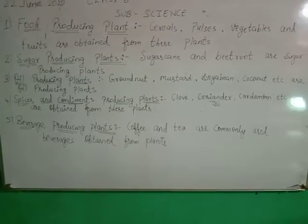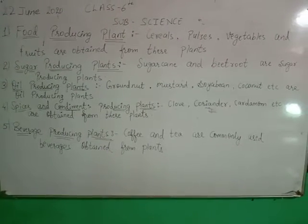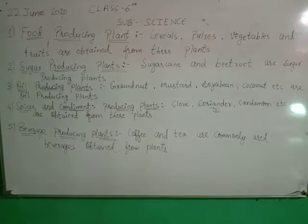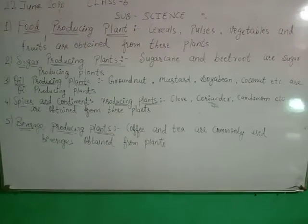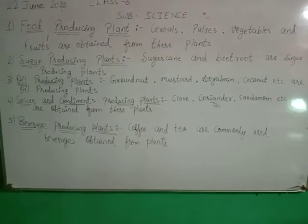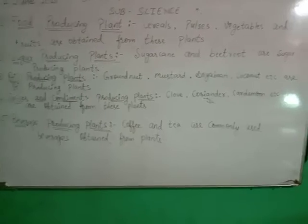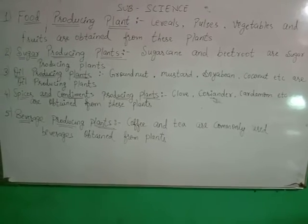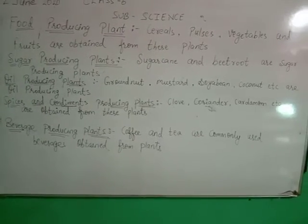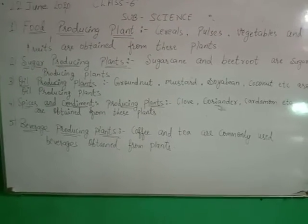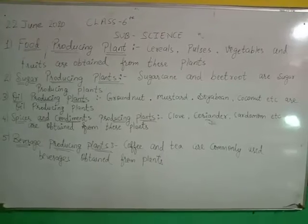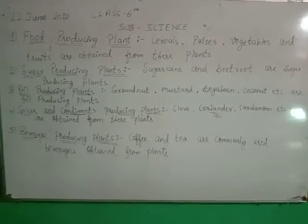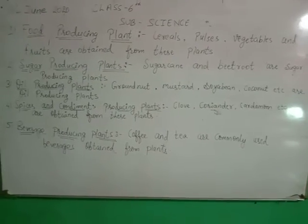Another type is sugar producing plants. Sugar is produced by these kinds of plants. Examples of sugar producing plants include sugarcane and beetroot.